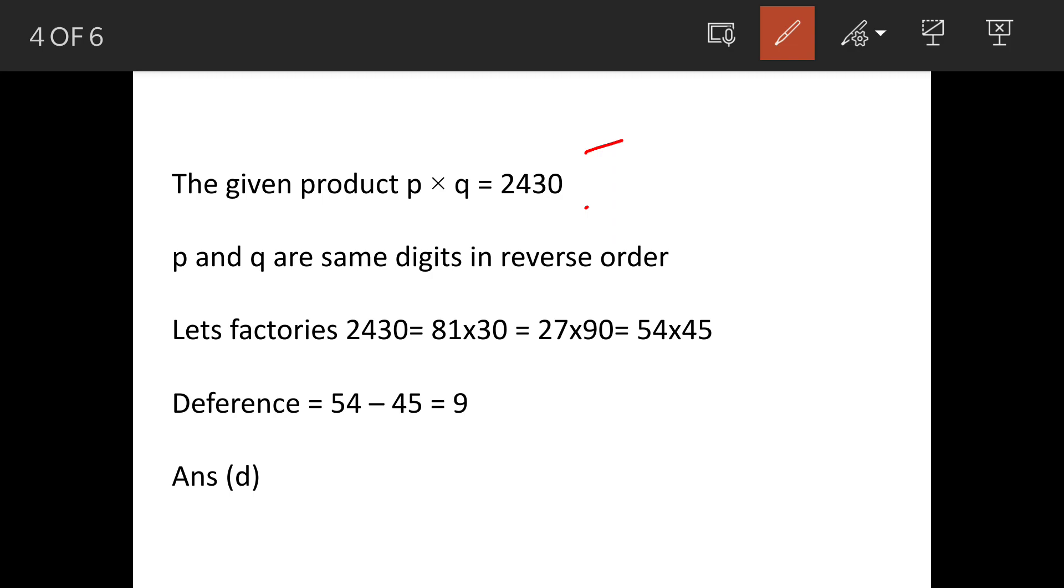When we factorize 2430, we get one factor is 81 into 30, but here the digits of p and q are different. Second possibility is 27 into 90. Again, the digits are different.